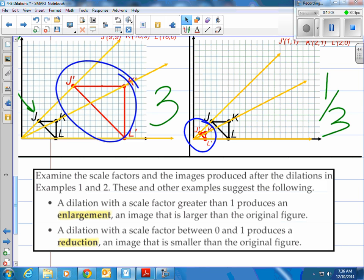An image that is larger than the original figure. How about the second one? A dilation with a scale factor between 0 and 1, meaning a fraction of 1, will produce a reduction. An image that is smaller than the original figure. So we had one-third, so therefore it's going to be a reduction. It's going to shrink. You may say it shrinks. That's something you might want to write in your notes there.